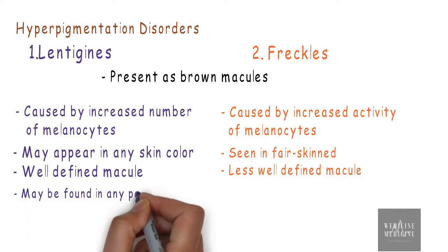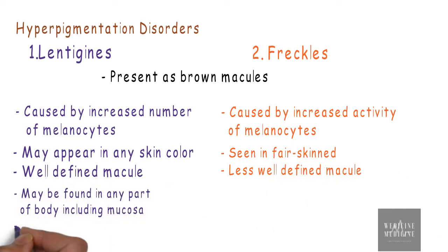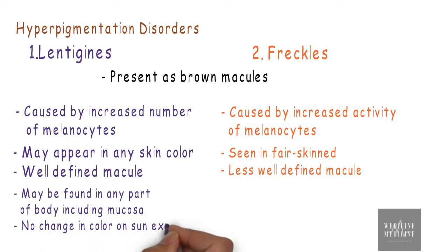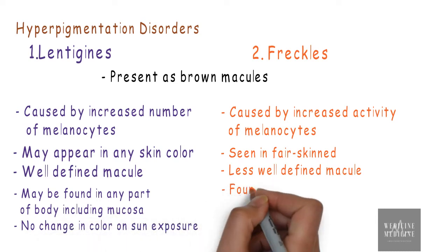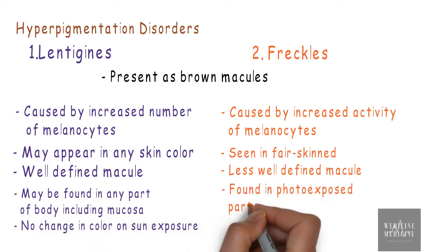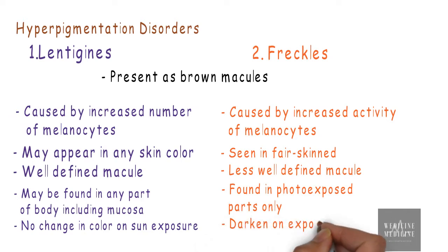Lentigens may be found in any part of the body including mucosa, and there is no change in color on sun exposure. Freckles, on the other hand, are found in photo-exposed parts only and darken on exposure to sun.